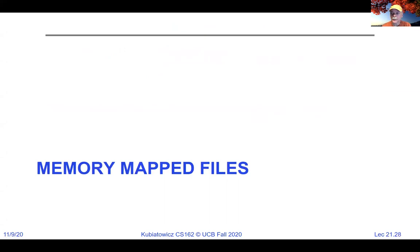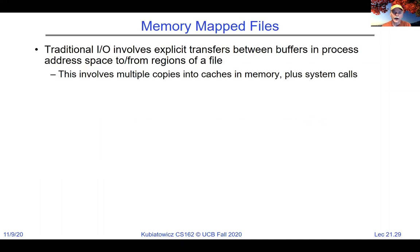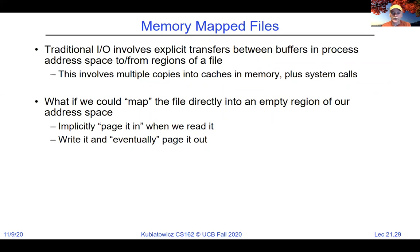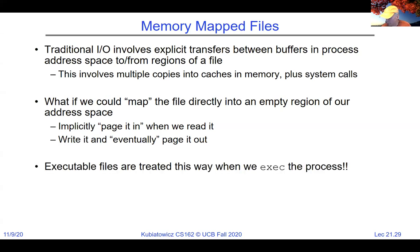Now let's talk about memory-mapped files — a different way to do I/O. Instead of open/read/write/close, which involves multiple copies into caches and system calls, you just map the file into memory like you map other things in virtual memory. File manipulation then looks like memory reads and writes. Executable files are treated this way: when you exec a process, the virtual memory is pointed at where the process is on disk, and pages fault in as needed.